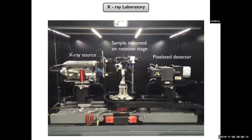So in the x-ray laboratory, here you will see the x-ray source that creates, that passes through the object and this is the rotating stage. And then we have the pixelated detector there that collects all the projections.